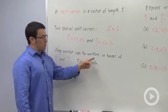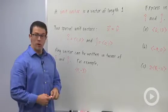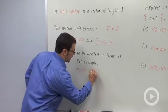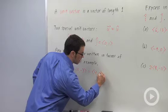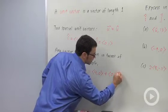Now any vector can be written in terms of i and j. For example, the vector 4 negative 3 can be written as 4, 0 plus 0, negative 3.